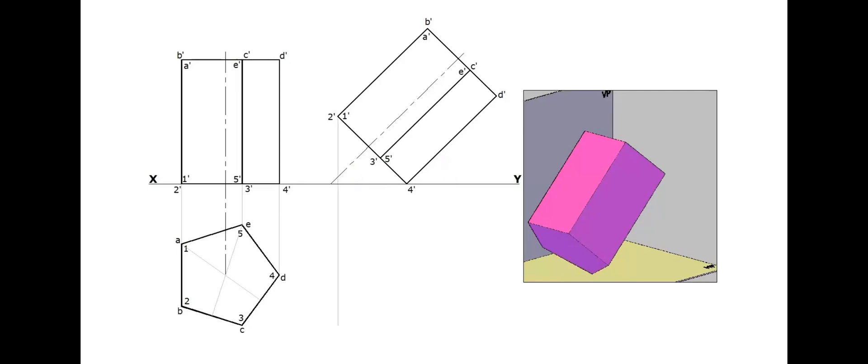Now, project all the points below the XY line. Project the base corners of the first stage plan also. Trace of the corresponding intersection of points.